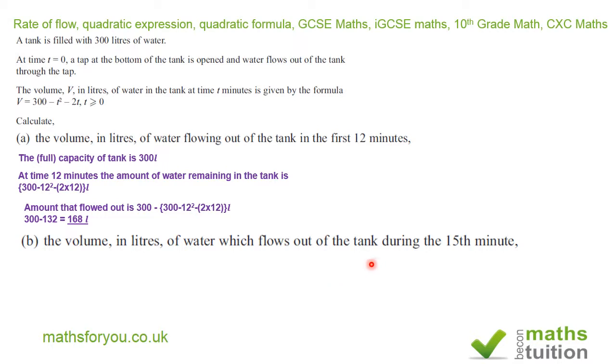For part two, it says calculate the volume in liters of water which flows out of the tank during the 15th minute. So you need to find the amount of water left at the 14th minute and the amount of water left in the 15th minute, and the difference will be the amount of water that flows out of the tank in the 15th minute.